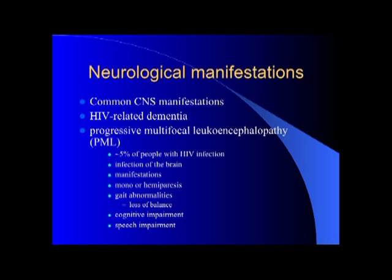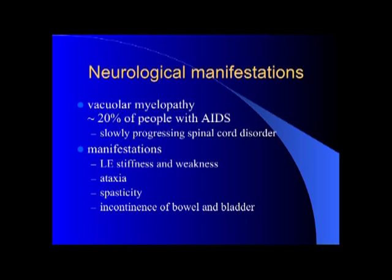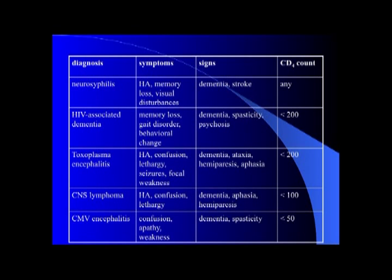About 5% of people with HIV can develop PML, which is an infection of the brain. Other manifestations include myelopathies, which are slow-progressing and can manifest with lower extremity stiffness and weakness, and ataxia.